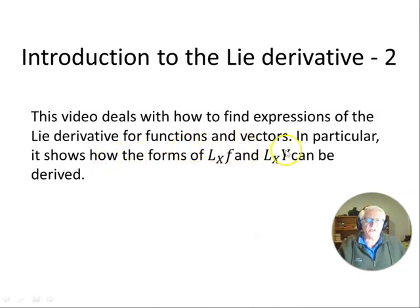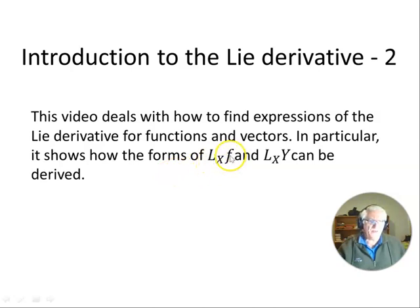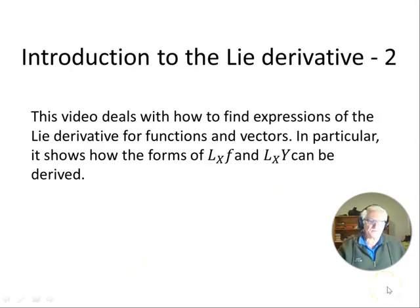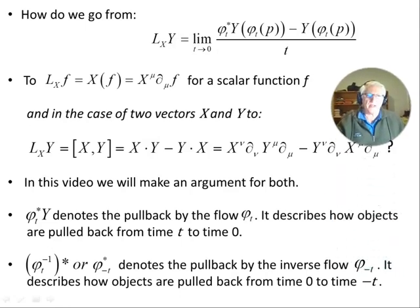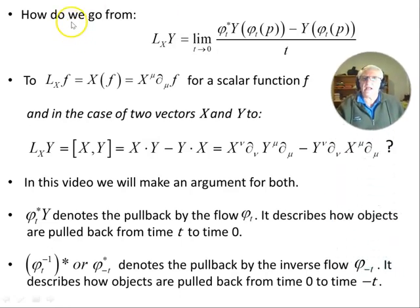Hello everyone and welcome to this video — an introduction to the Lie derivative, part two. This video deals with how to find expressions for the Lie derivative for functions and vectors. In particular, it will look at how we can arrive at the forms of the Lie derivative of a smooth function f with respect to the vector field X, and the Lie derivative of some vector Y with respect to some vector X. That's the purpose — let's make a start.